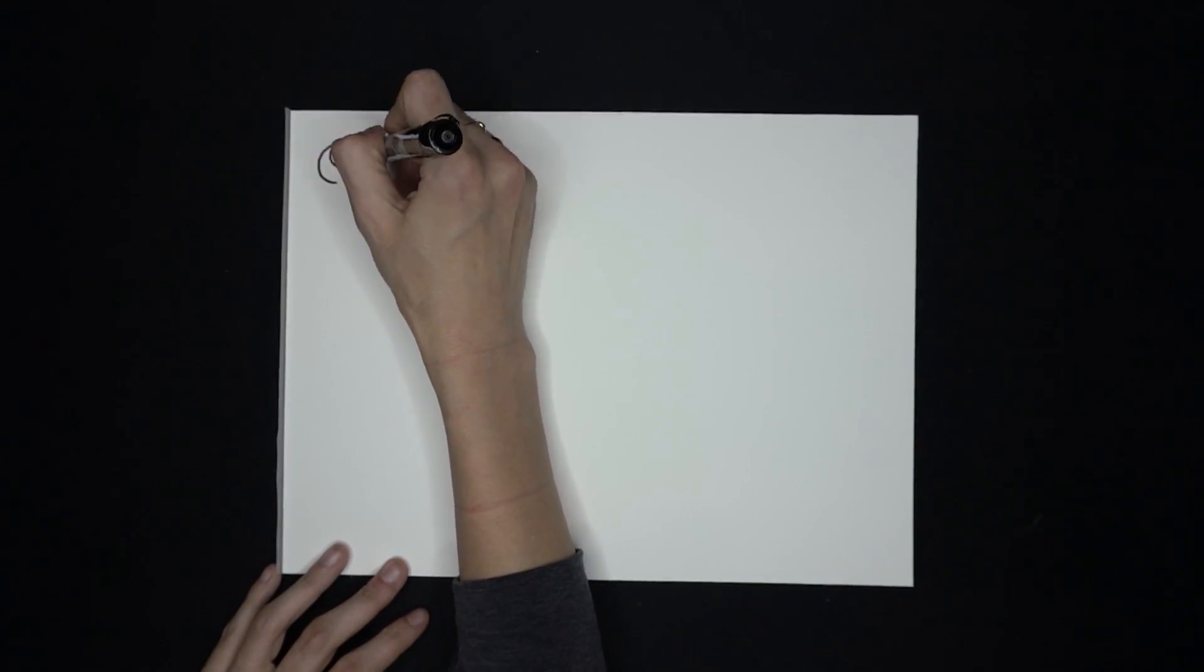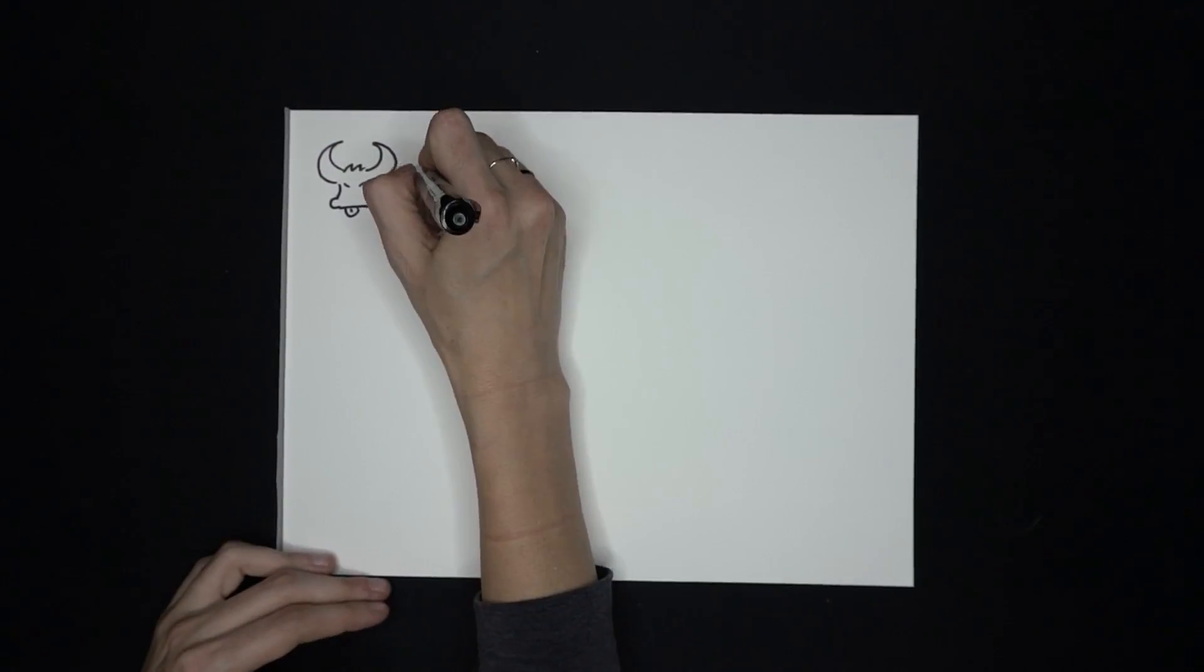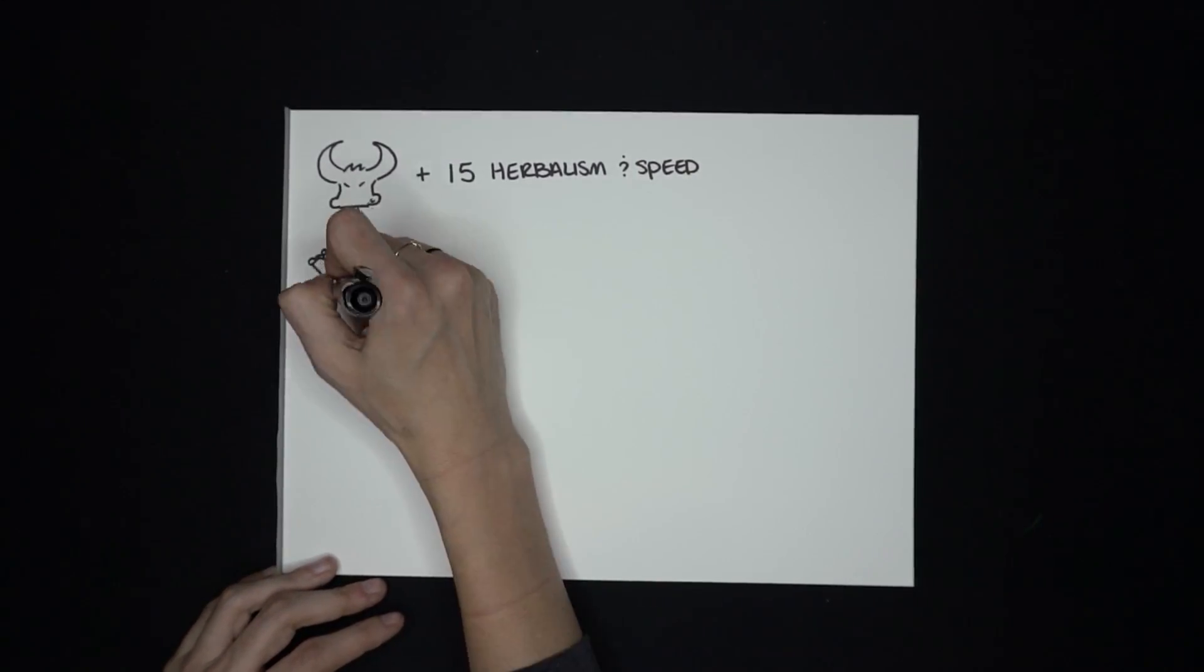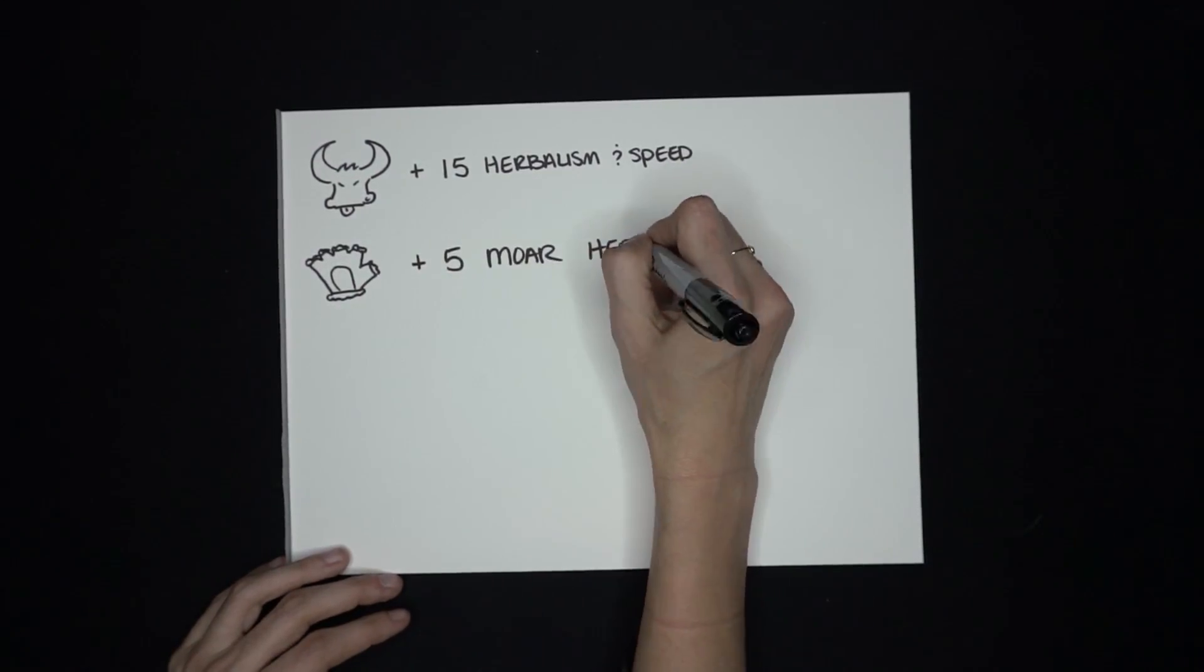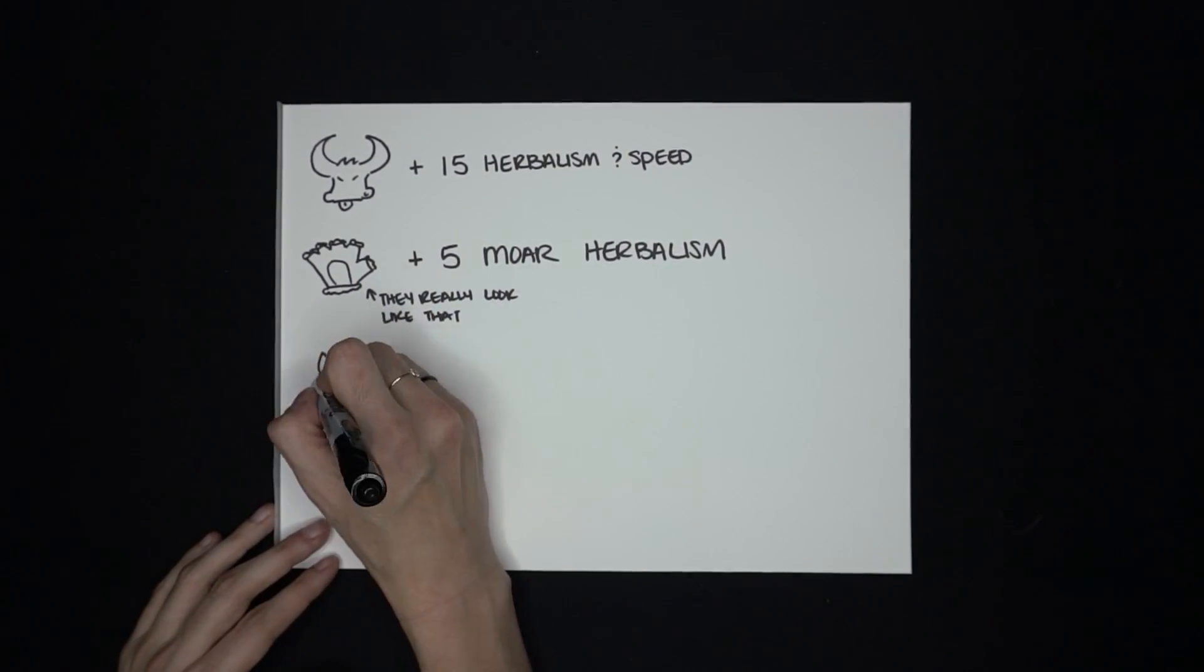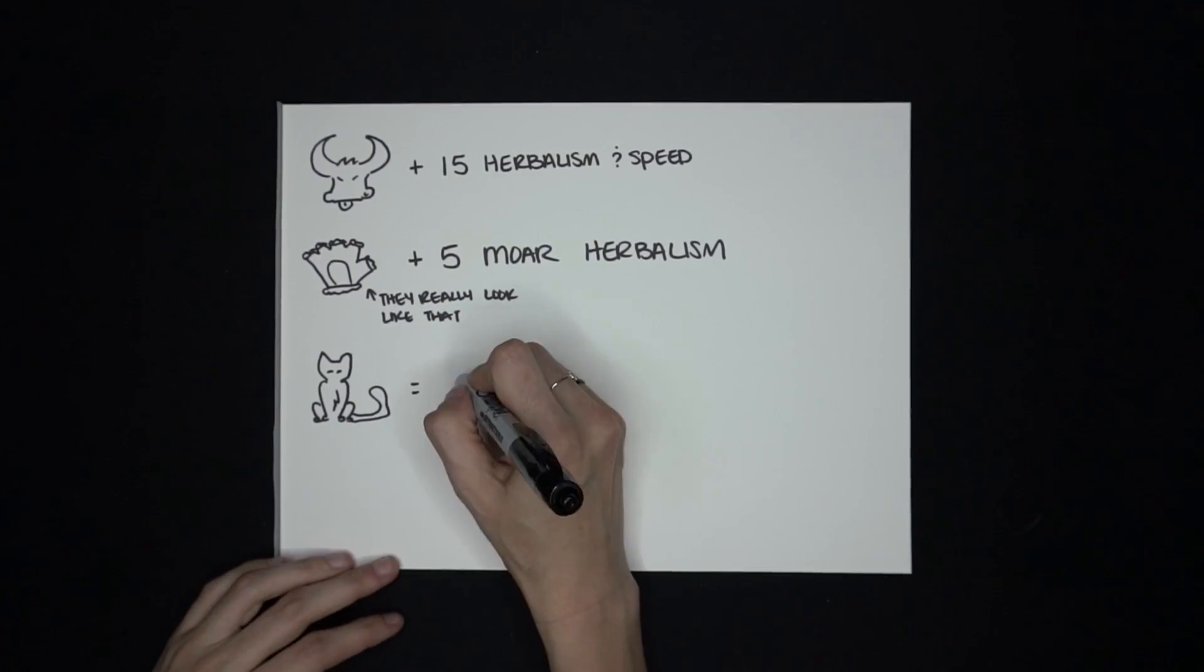So, Tauren pick flowers faster, plus have a plus 15 boost to herbalism. Add the herbalist gloves, and I have an extra five points in herbalism. I am a feral druid, so I can prowl around things that kill me with talents and swiftness, so I ran at a normal kitty speed even while invisible.